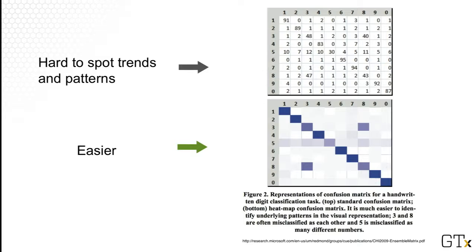At the same time, you'll see that row number five is also not that light, meaning there's quite a bit of misclassification going on there. Similarly, row number eight, column number three is very dark — so digit eight is highly misclassified, and very often as digit three. And if you think about it, they actually look pretty similar, which might explain the misclassification.